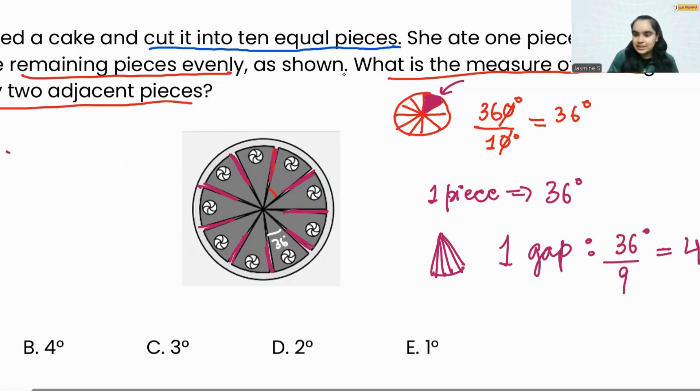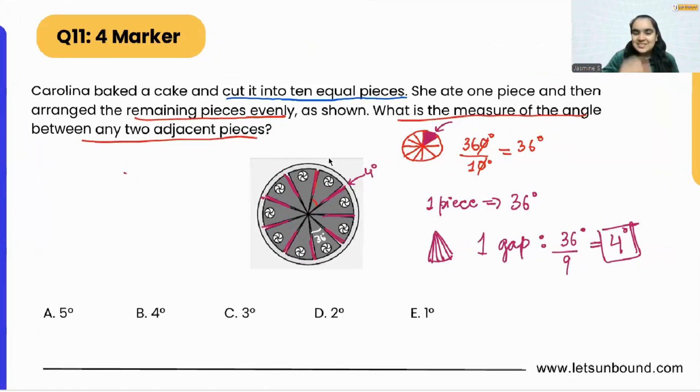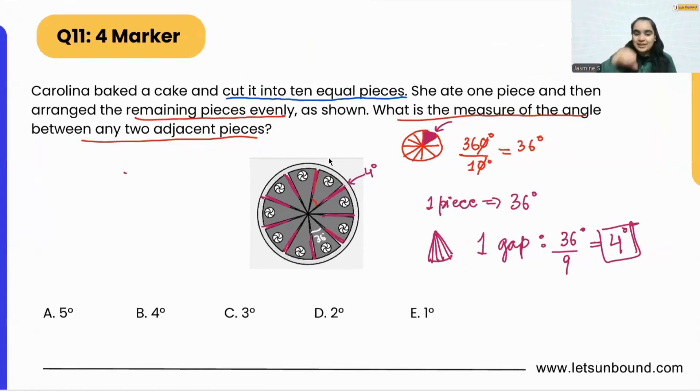It will be 4 degrees. That means this tiny little gap is 4 degrees. Now Carolina is very smart - no one should know that she has eaten that specific piece, so she kept all nine pieces in such a manner that there is a very tiny little gap between any two adjacent pieces. That specific gap is 4 degrees. We got the answer: that is option B.